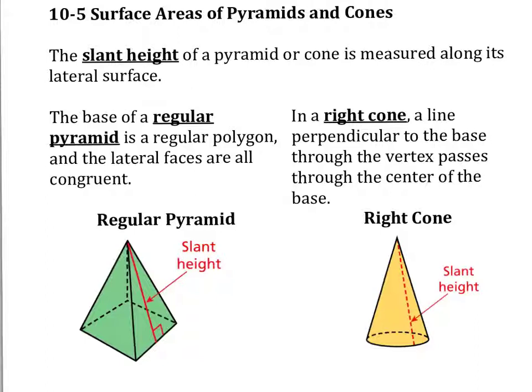So if you look at the pyramid and the cone at the bottom here, the slant height is shown in red. So the slant line is along the surface, and as you can see on the pyramid, it's perpendicular to the base, isn't it?